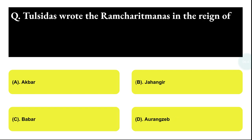Next question: Tulsidas wrote the Ram Charitamanas during the reign of whom? Option A: Akbar, Option B: Jahangir, Option C: Babur, Option D: Aurangzeb. The correct answer is option A, that is Akbar.